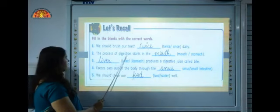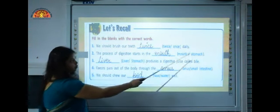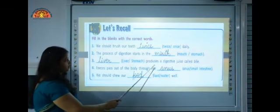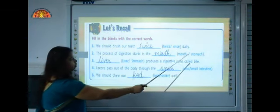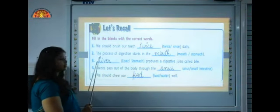Then, the process of digestion starts in the blank: mouth or stomach. So mouth will come over here. Now third, blank produces a digestive juice called bile, liver or stomach. So correct answer is liver.